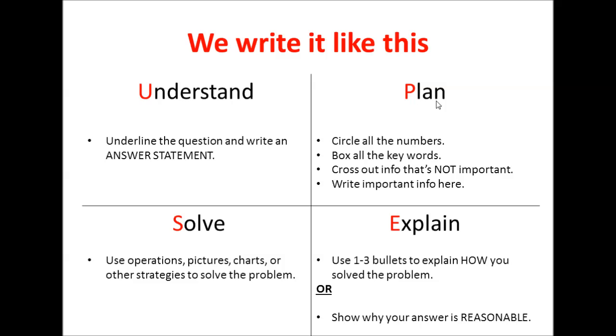You circle all the numbers that are in your problem. You box all keywords, cross out information. After you circle and box those things, you look at what you circled and boxed and cross out information that's not important. Then you take that information and you write it here in an organized fashion. That way you've gotten rid of all the fluff and you know what information you have. You know what you're looking for from this part and you know what information you have from this part.